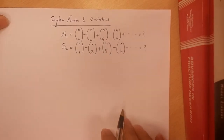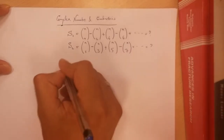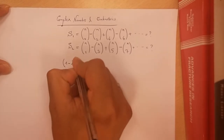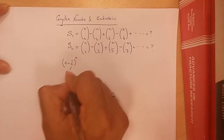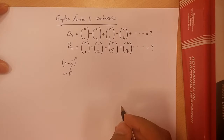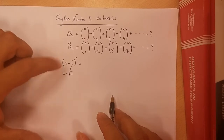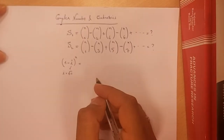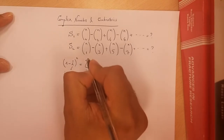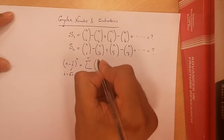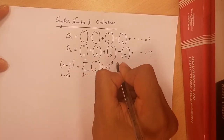The idea is to use the binomial expansion of (1 - i)^N, where i is the imaginary unit. I will start by calculating the expansion corresponding to this complex number. This gives the summation from J equal to 0 to N of C(J,N) times (-i)^J times 1^(N-J).